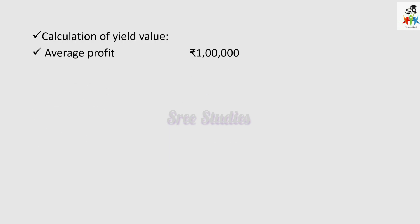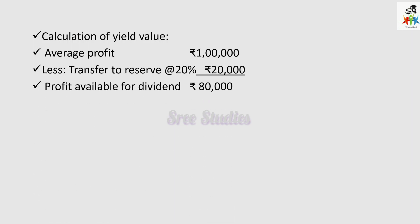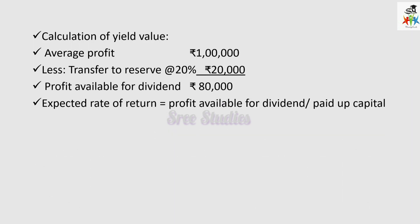Now for the yield value. The average profit is given for 4 years. Transfer to reserve is 20%, so we get the profit available for dividend. We calculate the expected rate of return as profit available for dividend divided by paid up capital — that is 80,000 divided by 5 lakh — giving us 16 percentage.